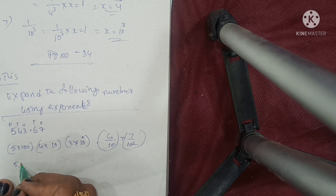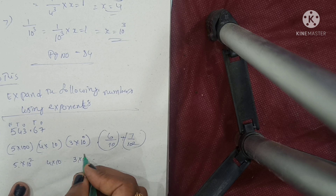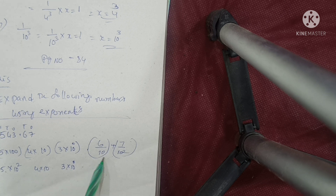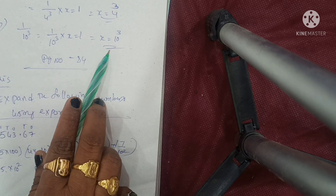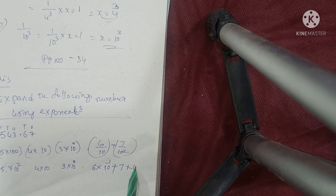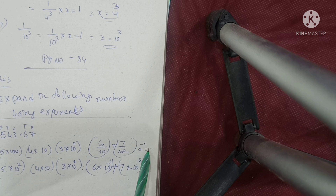Converting to exponent form: 5 into 10 squared, plus 4 into 10, plus 3 into 10 power of 0, plus 6 into 10 power of minus 1, plus 7 into 10 to the power of minus 2. Using the formula a^(-n) = 1/a^n, both decimal terms are converted.